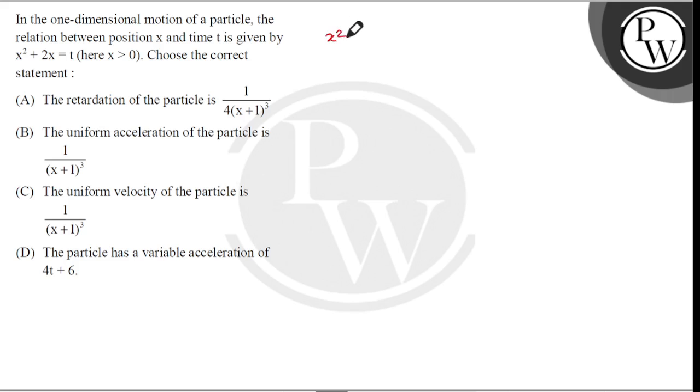Because here we have a variable x square plus 2x equals t, then we differentiate with respect to time. We have 2x dx by dt plus 2 dx by dt equals 1. So we have 2x into v plus 2v equals 1.